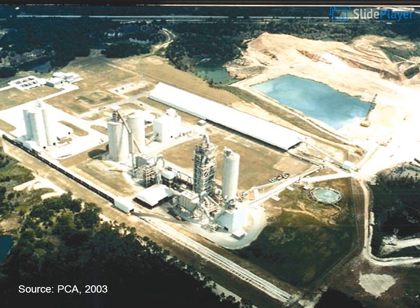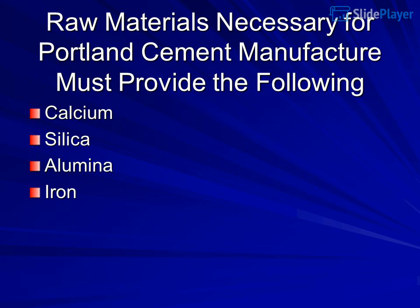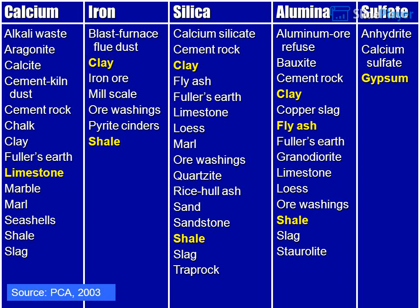Raw materials necessary for Portland cement manufacture must provide the following: calcium, silica, alumina, and iron. Sources include aragonite, calcite, cement kiln dust, cement rock, chalk, clay, fuller's earth, limestone, marble, marl, seashells, shale, and slag blast furnace flue dust, iron ore, mill scale, and ore washings.